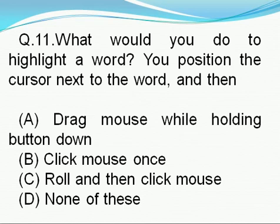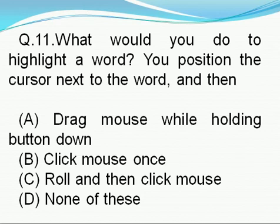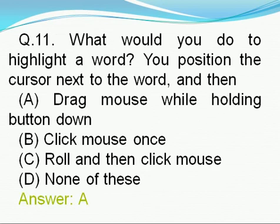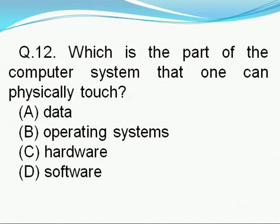Question number 11: What would you do to highlight a word? You position the cursor next to the word and then — option A: drag mouse while holding button down, option B: click mouse once, option C: roll and then click mouse, option D: none of these. Right answer is A, i.e., drag mouse while holding button down.